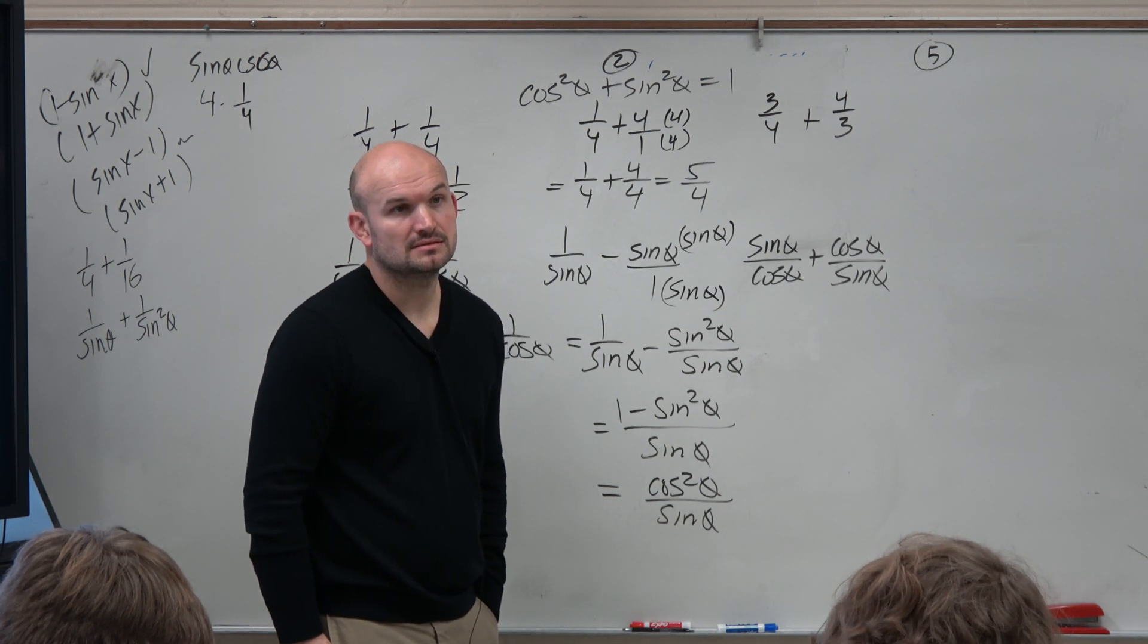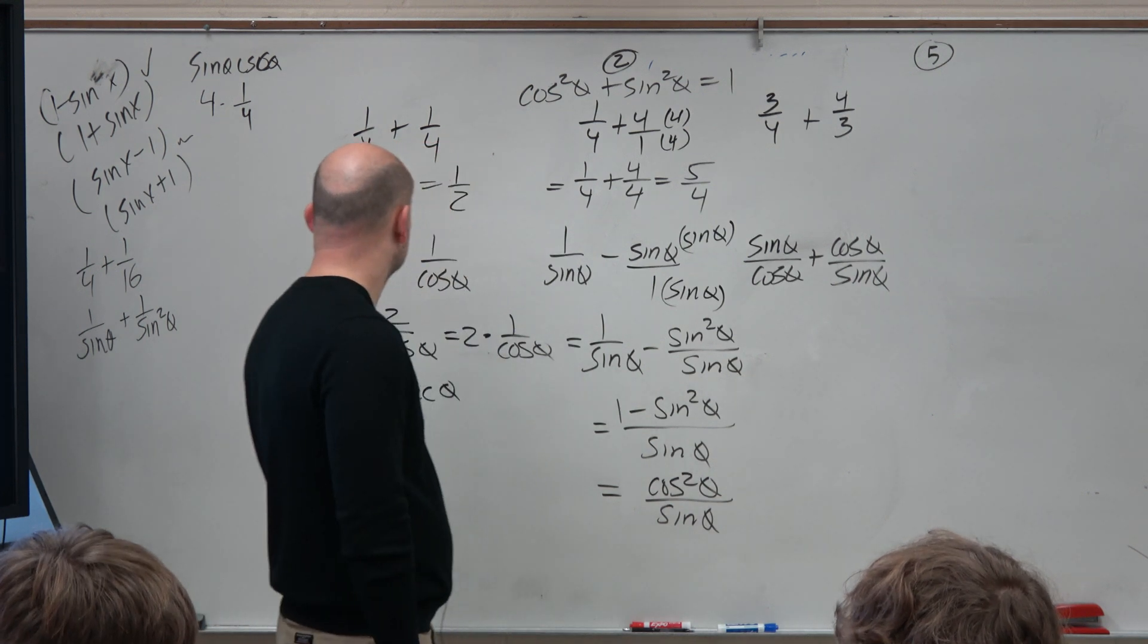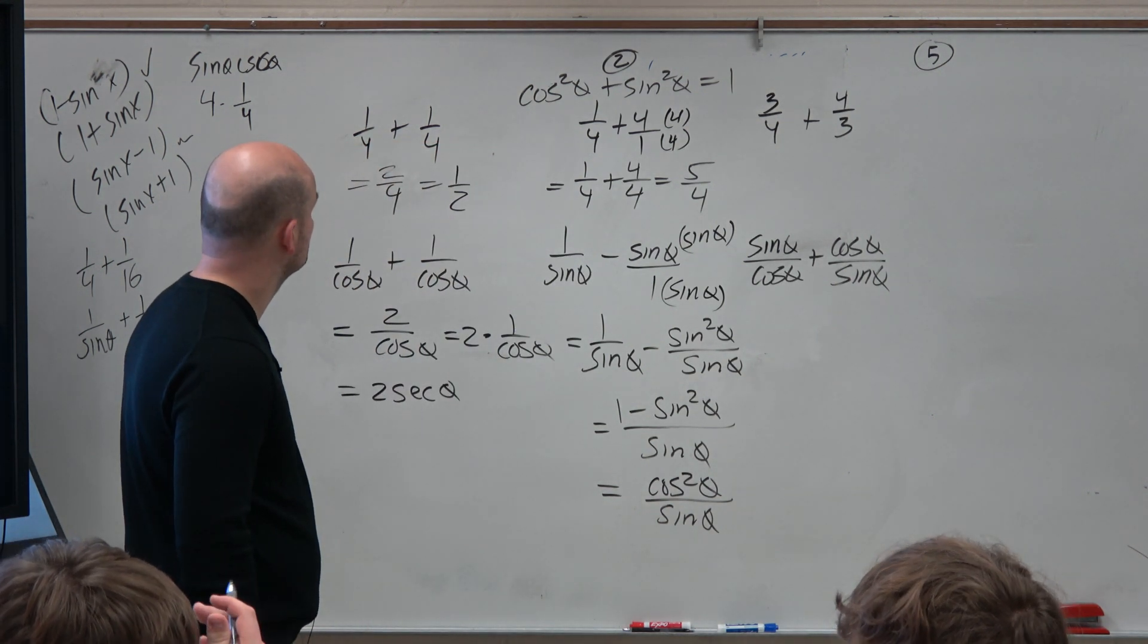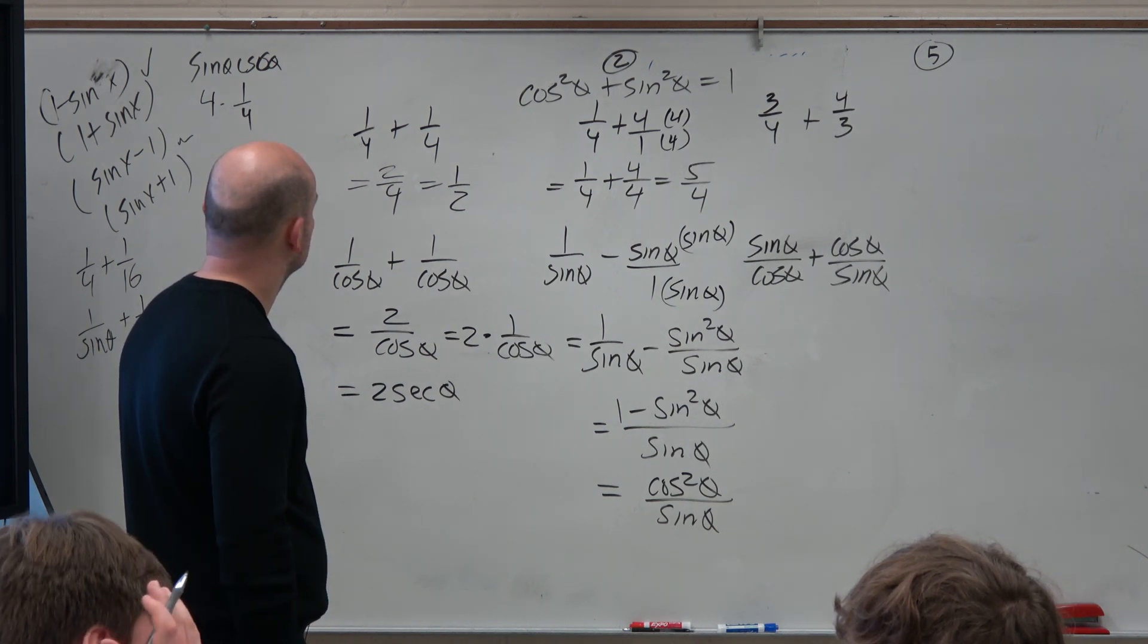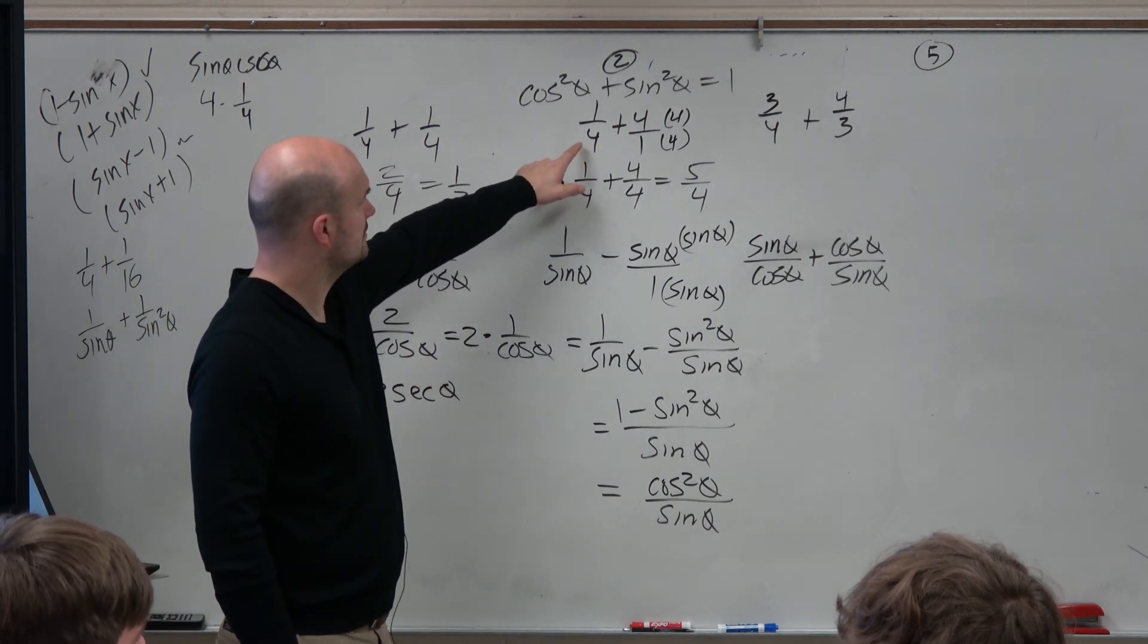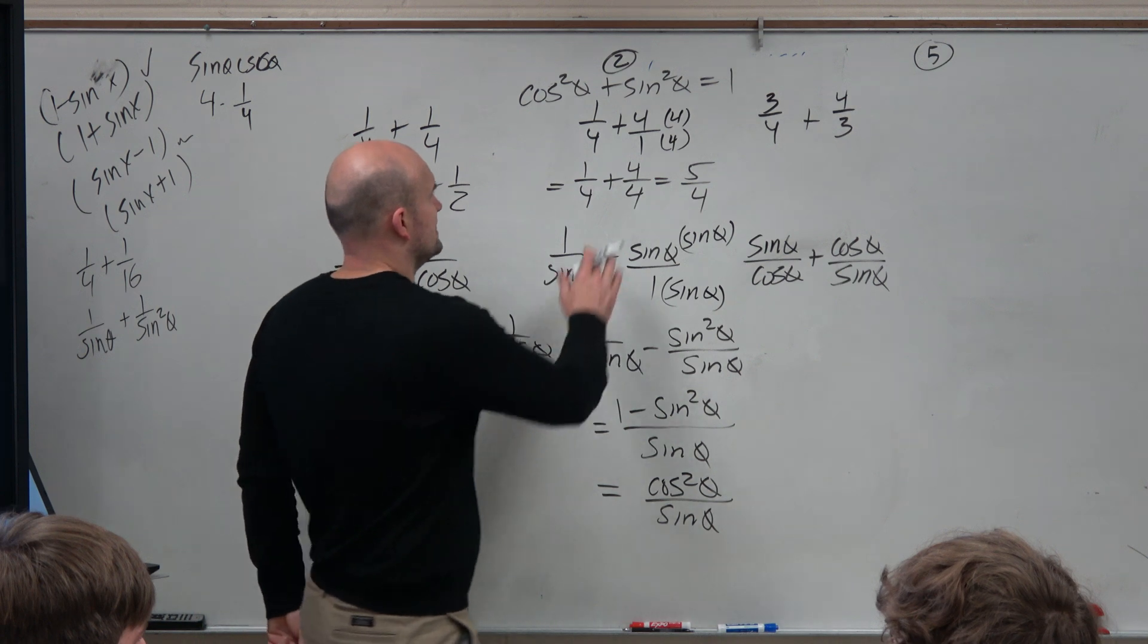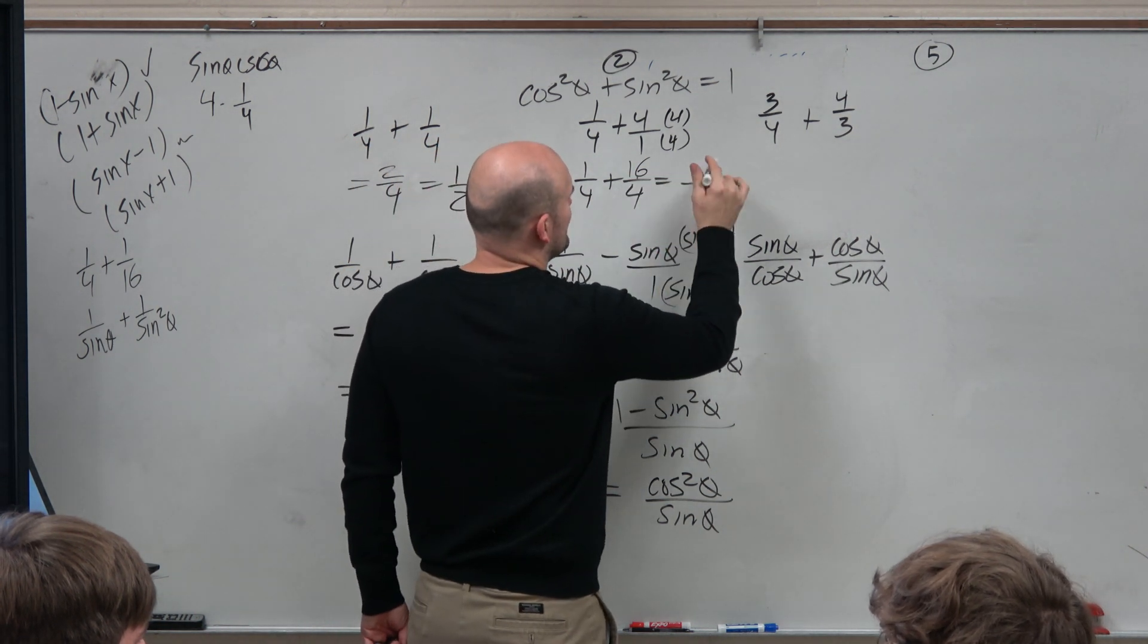This is going to sound easier, but in your first problem, if you use 1 fourth plus 4 fourths, or if you have 1 fourth plus 1, not 4, like you didn't multiply 4 by 4. What are you talking about? This problem? Yeah. Oh, it's supposed to be a 16, isn't it? I was wondering. I'm like, I don't remember getting that. You're right. Thank you very much. That's 17 over 4.